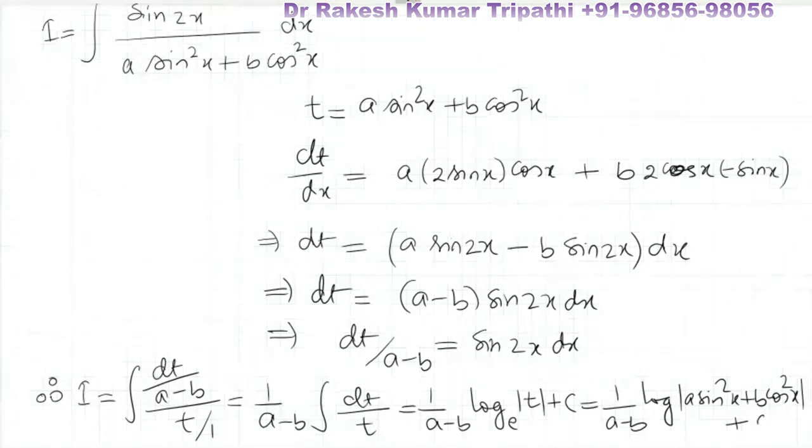One upon a minus b log of mod of a sin square x plus b cos square x plus capital C integral constant. So finally this is the answer. Integral of sin 2x upon a sin square x plus b cos square x.